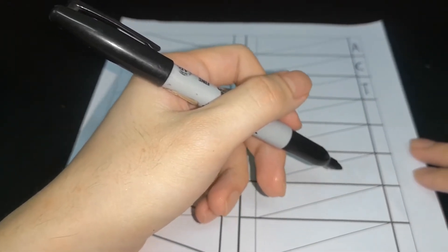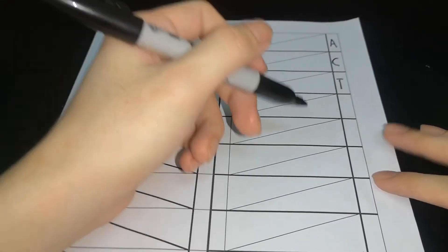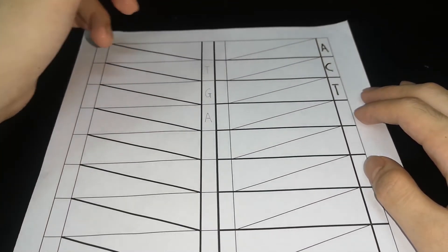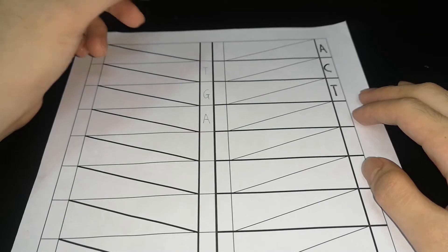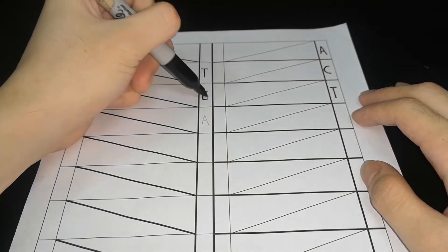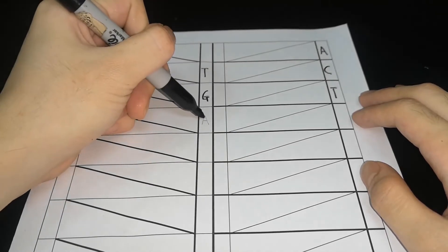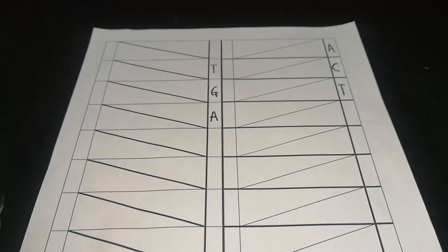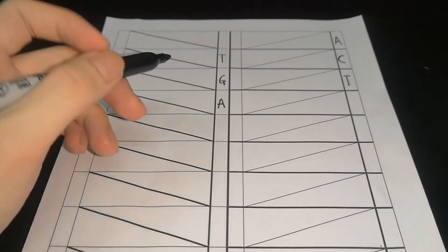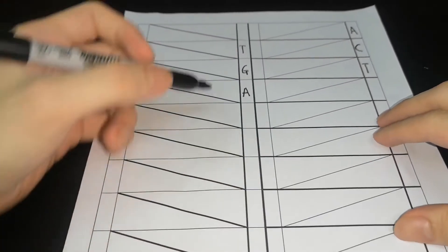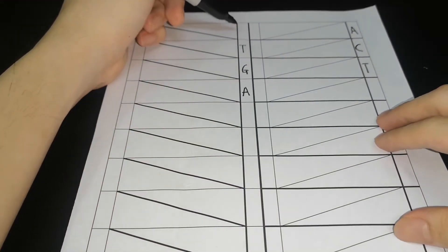Then write the complementary letter in the box diagonally across from the sequence. Continue the complementary sequence until the bottom and fill the top box here with any letter.